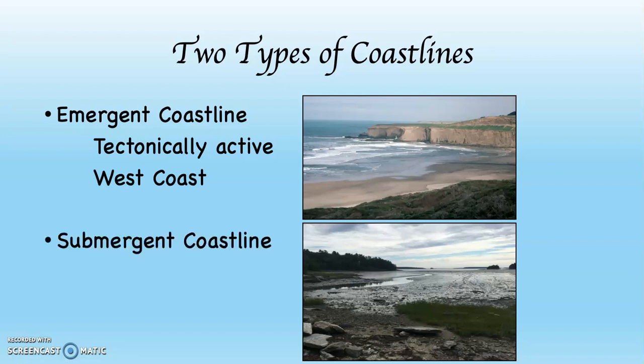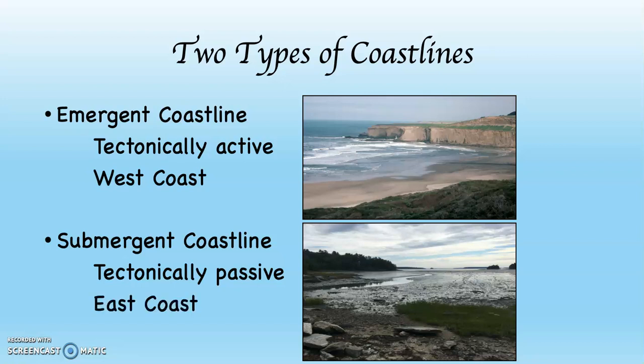The other type of coastline is called a submergent coastline. Submergent coastlines are being drowned by the sea. This can be for a variety of reasons, not the least of which is that it could be tectonically passive, and because of that it may very well be subsiding, and/or sea level could be rising. The submergent coastline in the US would be the east coast of North America.